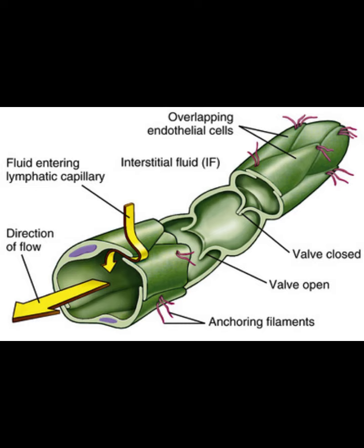When pressure is greater inside the capillary, the flap compresses and lymph cannot move back into the interstitial fluid. Conversely, when pressure is greater outside the lymphatic capillary, the anchoring filaments pull on the capillary wall, opening the flap and allowing fluid to enter. Similar to veins, larger lymphatic vessels have valves that open in only one direction, guiding lymphatic fluid toward the cardiovascular system.